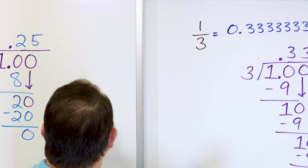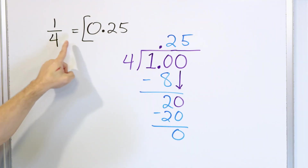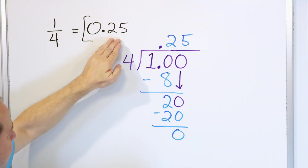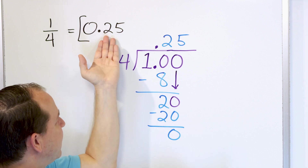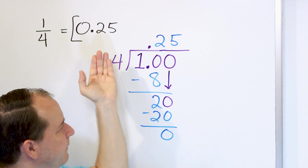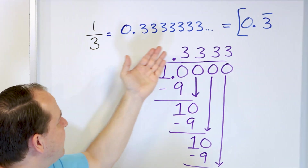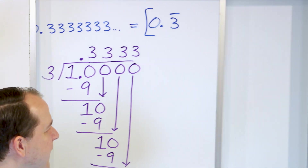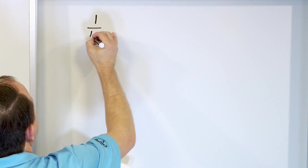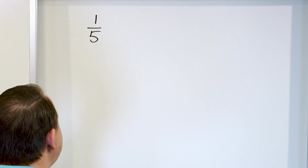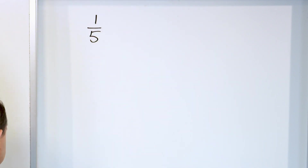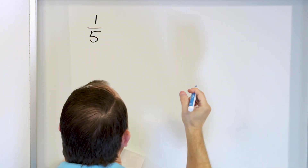Some fractions will have a decimal equivalent that stops — you can call that a terminal decimal. And some fractions will have a decimal that never, ever stops — those are special as well. So only two more problems. Let's take a look at the fraction 1/5.